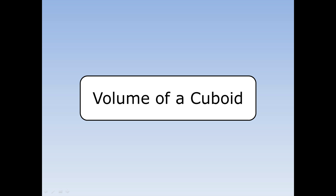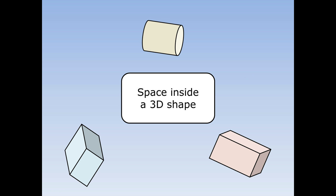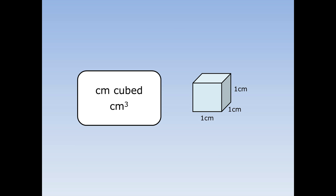Volume of a cuboid. Volume is the space inside a three-dimensional shape. We measure volume using centimetres cubed, which we write as centimetres with a little three above it. One centimetre cubed is a cube one centimetre by one centimetre by one centimetre.